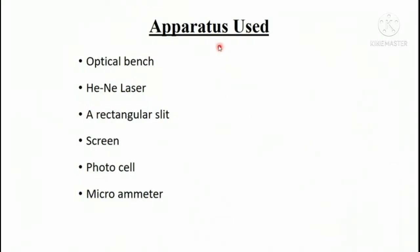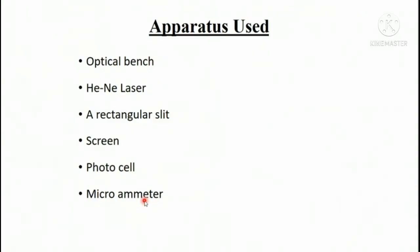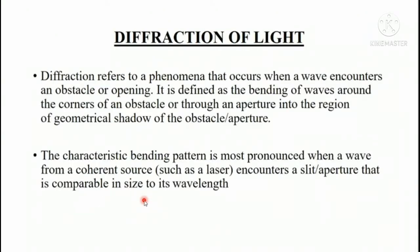The apparatus we will be using here is an optical bench, which is a one-and-a-half meter long bench on which all the things are mounted. A helium-neon laser, which is a red laser in our case, a rectangular slit of few microns, and a screen on which we will see the pattern after diffraction, and a photocell which is a detector that converts light into current and this current is read on a microammeter. This microammeter has different ranges, so according to our current we adjust it.